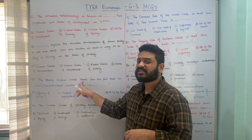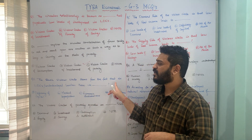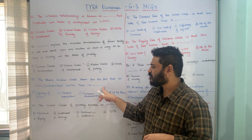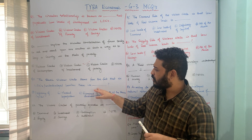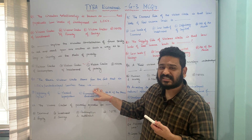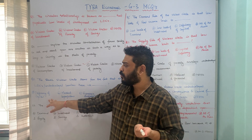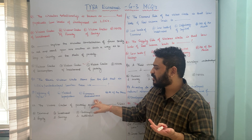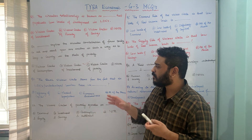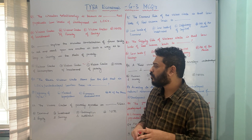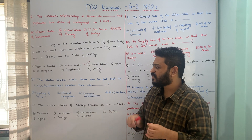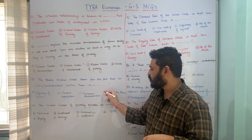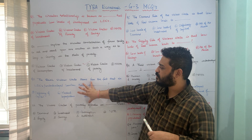The basic vicious circles stem from the fact that in an underdeveloped or least developed country, there is dash or there are dash. Options: A — deficiency of capital; B — market imperfections; C — economic backwardness; D — all of the above. The basic vicious circles stem from all three: deficiency of capital, market imperfections, and economic backwardness. Therefore, option D, all of the above, is the correct answer.